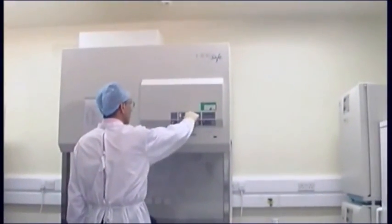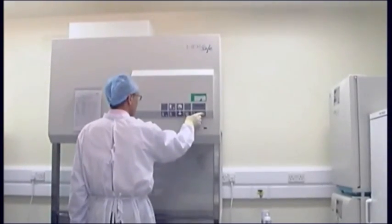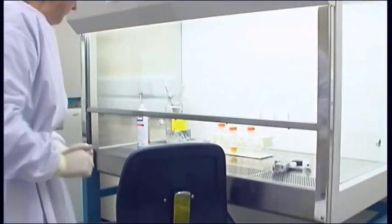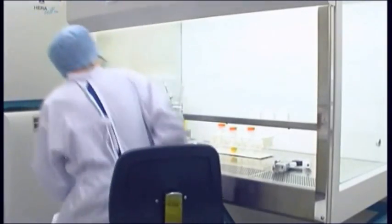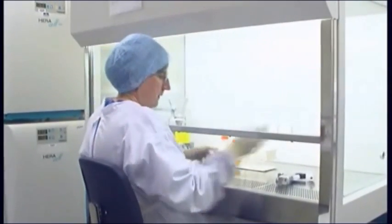Turn the safety cabinet on 10 to 15 minutes before you start working to allow the air flow through the cabinet to stabilize. Ensure that the cabinet is clear of all unnecessary items, spray with 70% alcohol solution and allow to settle before starting work.